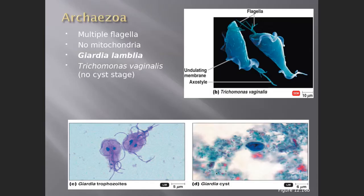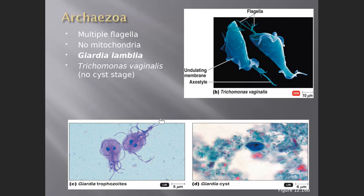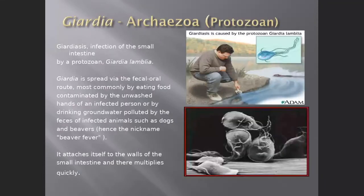The Archaeozoa are ancient protozoans — multi-flagellated and lacking mitochondria, making them more similar to bacteria. Their electron transport system is located in the plasma membrane. Two clinically important organisms are Giardia lamblia and Trichomonas vaginalis.